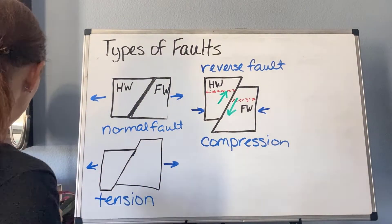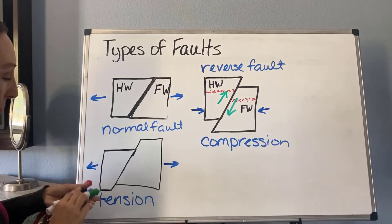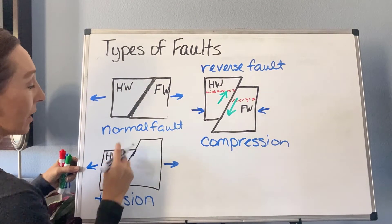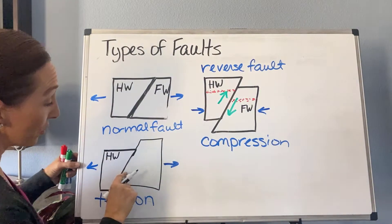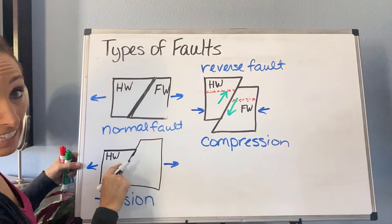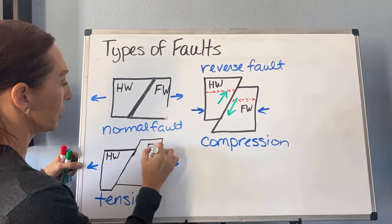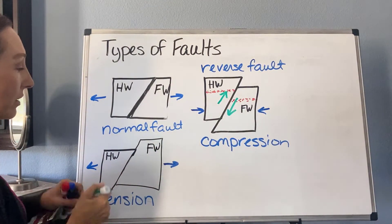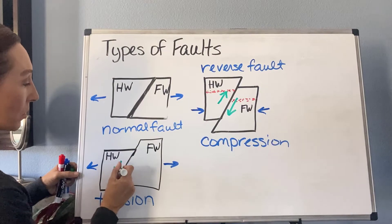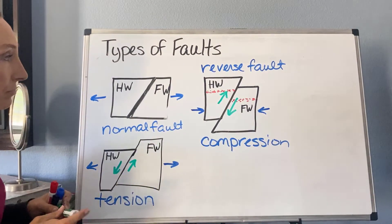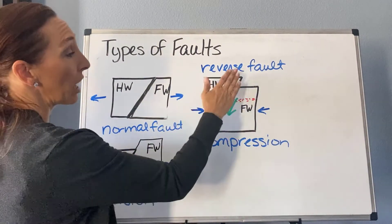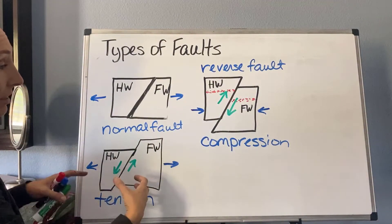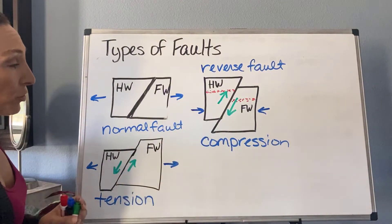This is called a normal fault. Let's label our hanging wall and foot wall. Notice the hanging wall — even though it's down below — if you were standing down here, it would still be hanging above you. So in this case, my hanging wall has moved down relative to my foot wall. To summarize: hanging wall moves up, it's compression and a reverse fault; hanging wall moves down, it's tension and it's called a normal fault.